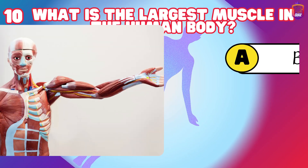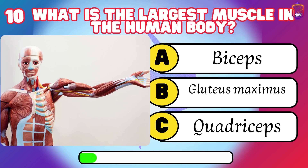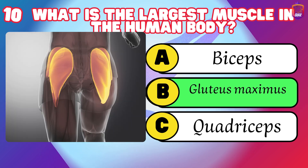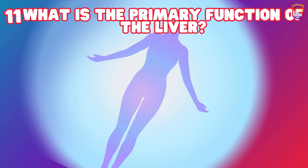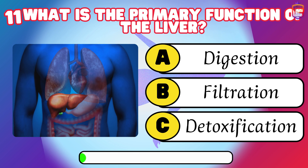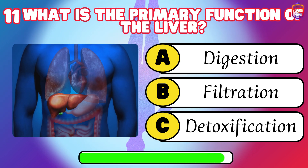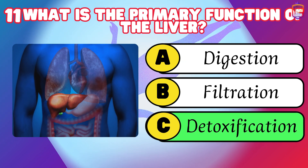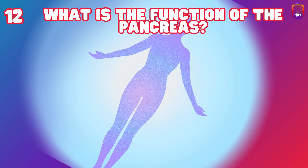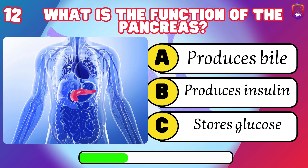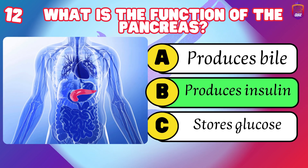What is the largest muscle in the human body? Gluteus maximus. What is the primary function of the liver? Detoxification. What is the function of the pancreas? Produces insulin.